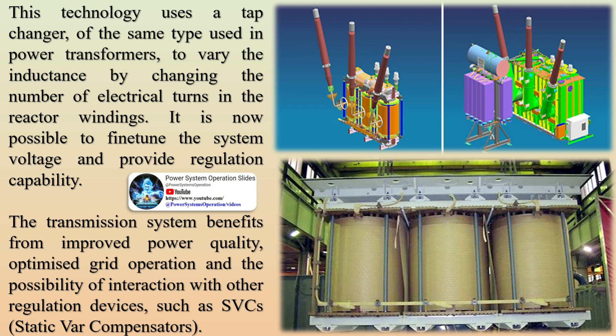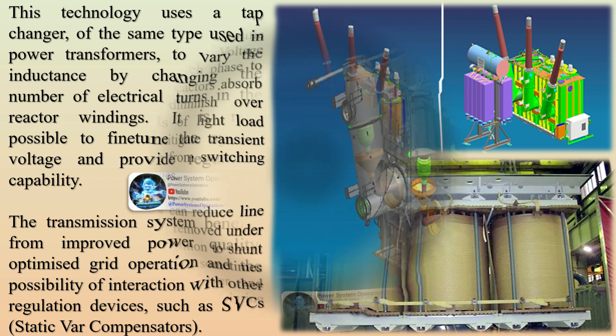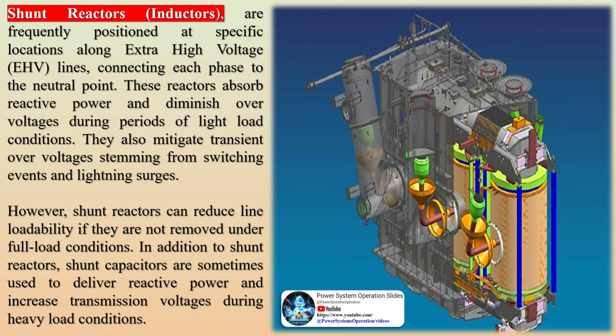The transmission system benefits from improved power quality, optimized grid operation, and the possibility of interaction with other regulation devices such as SVCs (static VAR compensators). Shunt reactor inductors are frequently positioned at specific locations along extra-high-voltage (EHV) lines, connecting each phase to the neutral point.